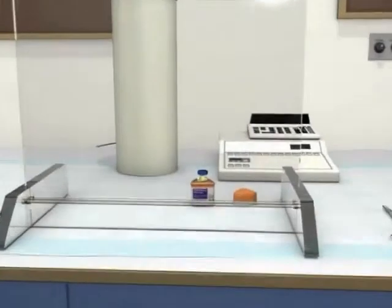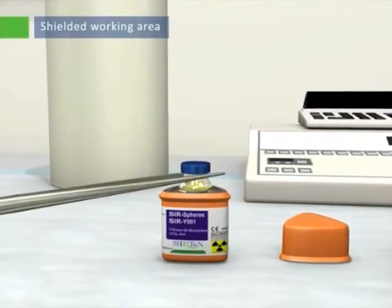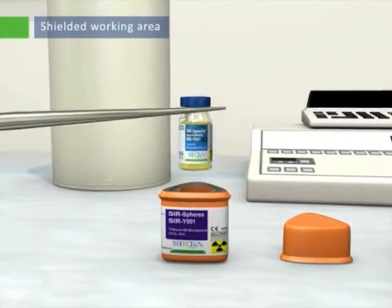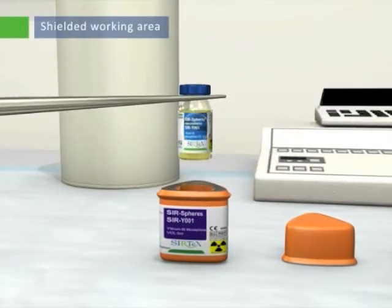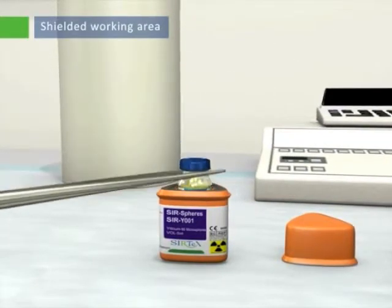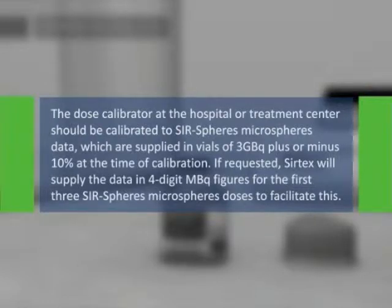Therefore, the best possible calibration source for the dose calibrator is a shipping vial containing SIRSPHERES Microspheres of a precisely known activity. The dose calibrator at the hospital or treatment center should be calibrated to SIRSPHERES Microspheres data, which are supplied in vials of 3 Giga Becquerels plus or minus 10% at the time of calibration.